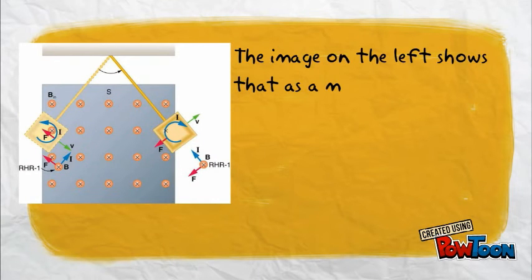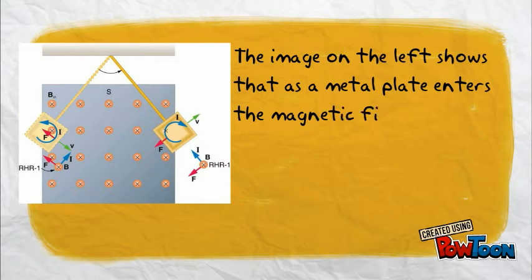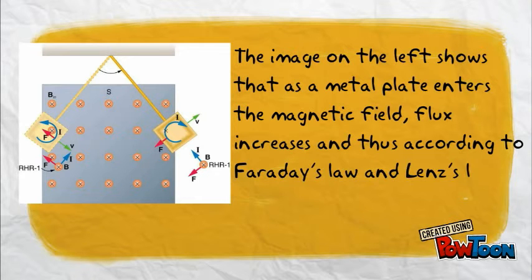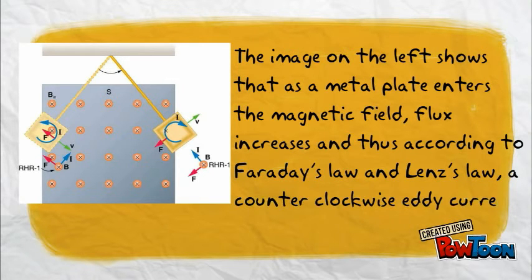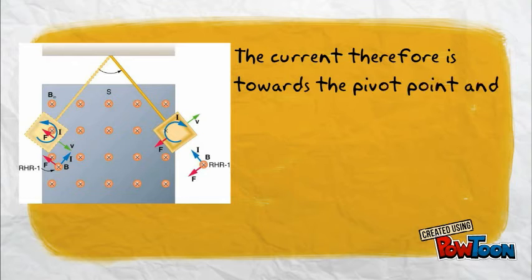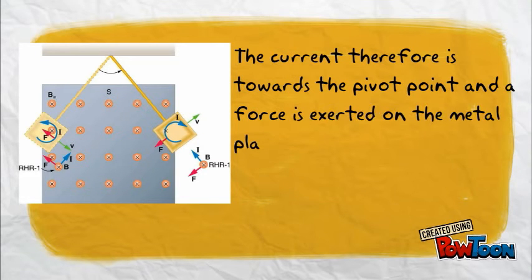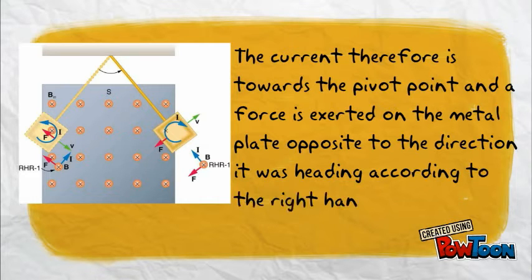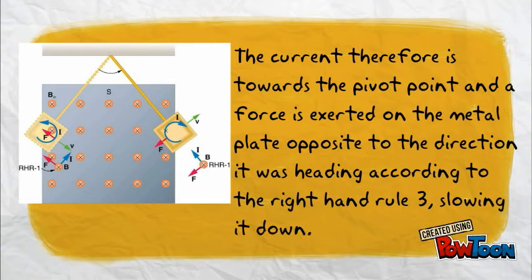The image on the left shows that as a metal plate enters the magnetic field, flux increases, and thus, according to Faraday's law and Lenz's law, a counterclockwise eddy current is made. The current is towards the pivot point, and a force is exerted on the metal plate opposite to the direction it was heading according to the right hand rule 3, slowing it down.